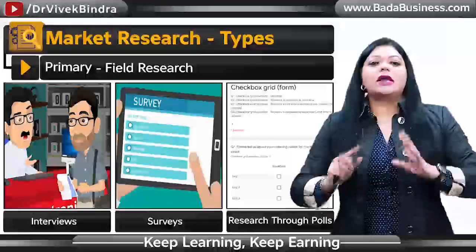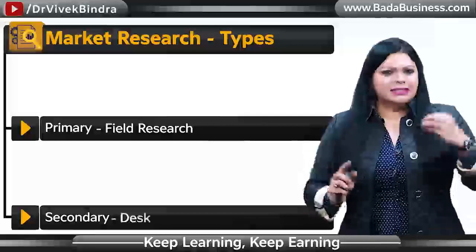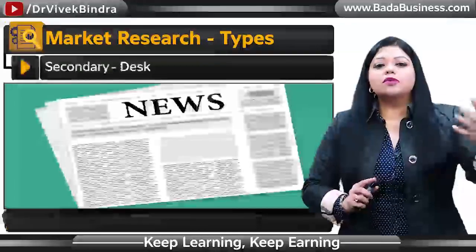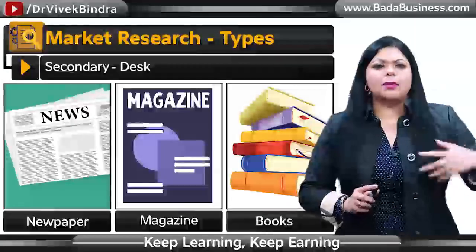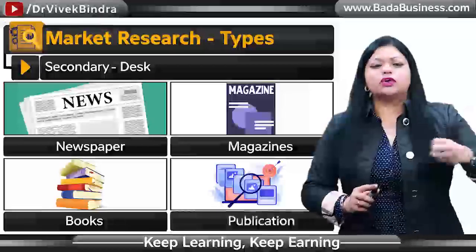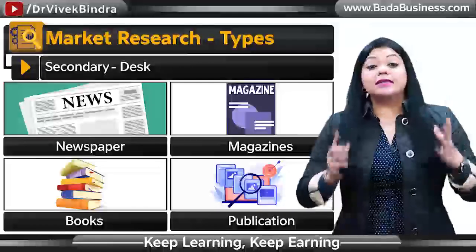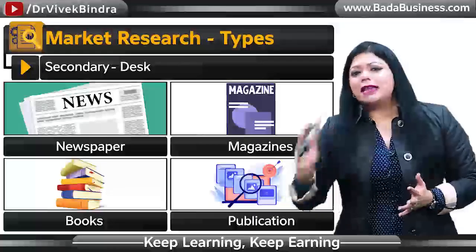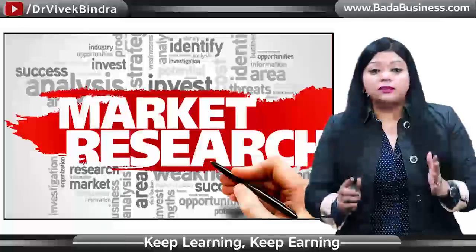The second way is secondary research, which you call desk research. In secondary research you can use newspapers, magazines, books, publications, or other sources. All of these methods have been explained in this course.